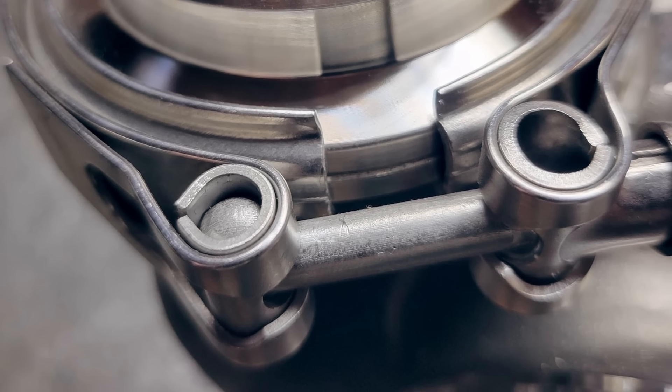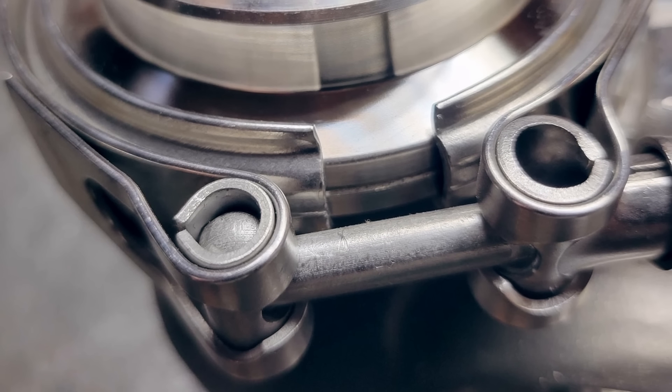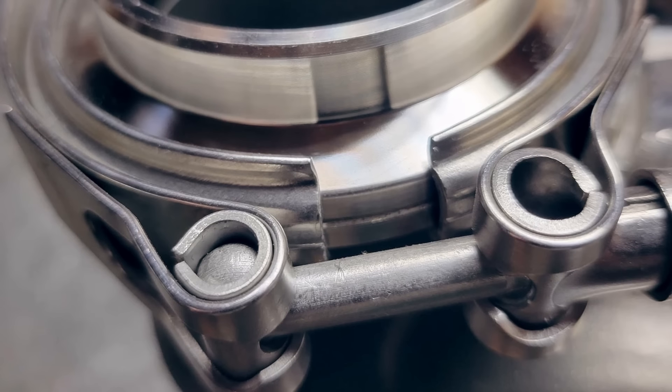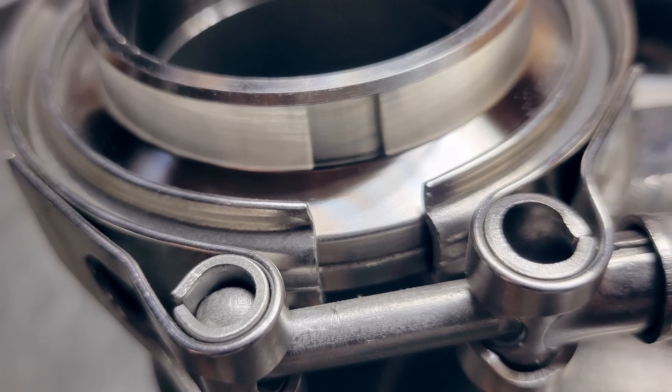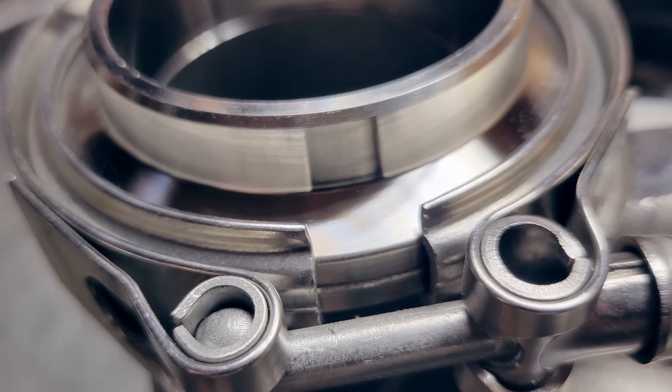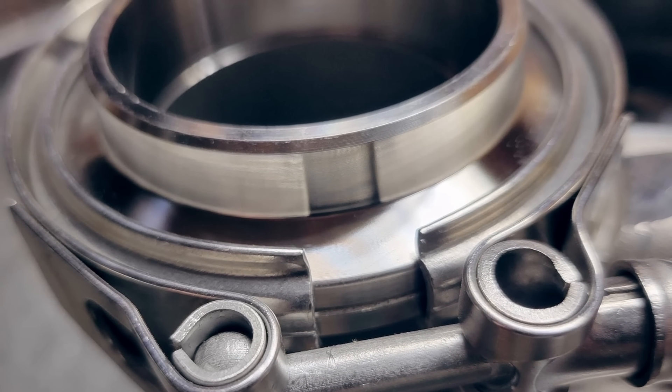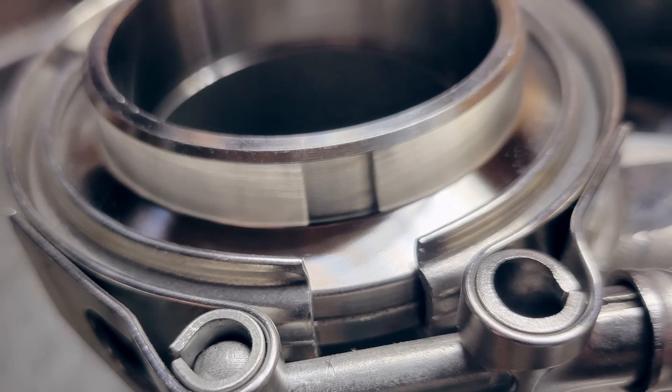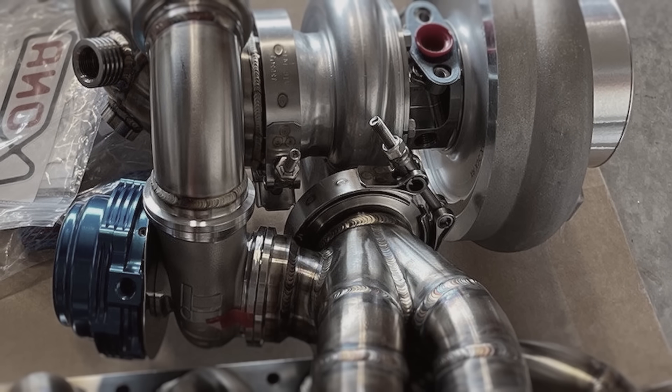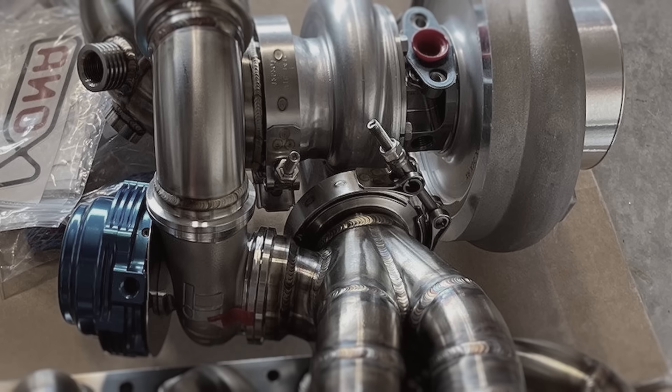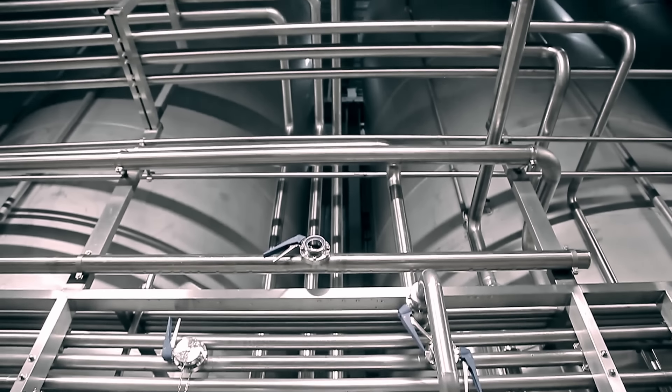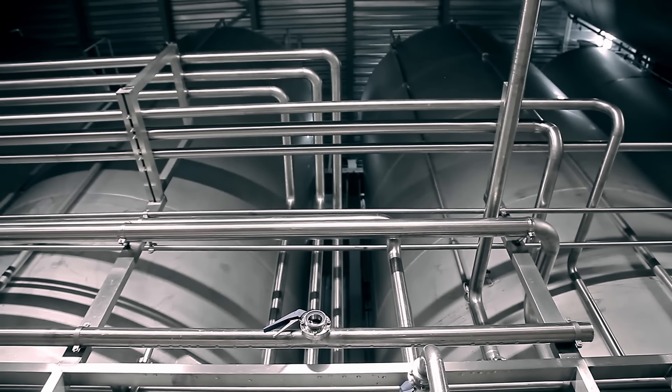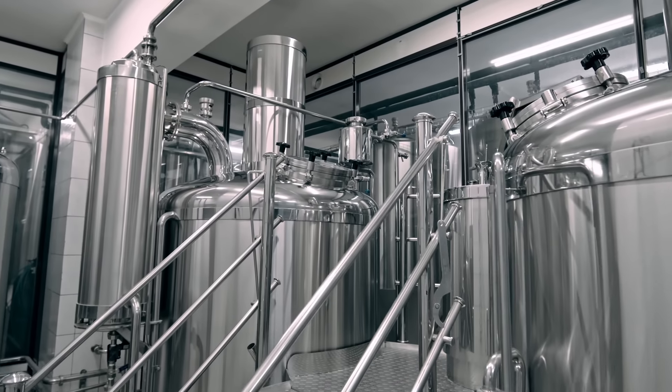Despite their strengths, V-band clamps do have limitations. They require precisely machined flanges to function correctly, which can increase overall system costs. Additionally, they may not be suitable for applications with extreme size variations due to thermal expansion, as this can affect the clamp's sealing ability. In recent years, V-band clamps have found new applications in other industries. In the automotive world, they are used in turbocharger installations and exhaust systems. They've also become popular in food and pharmaceutical industries for securing sanitary fittings, due to their ability to create a smooth, crevice-free joint that's easy to clean.